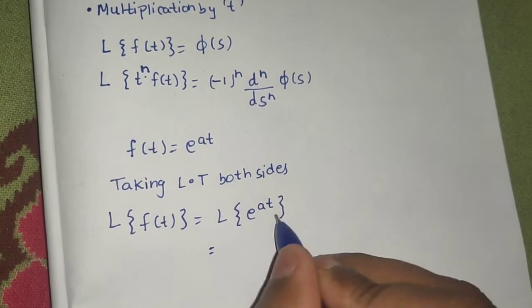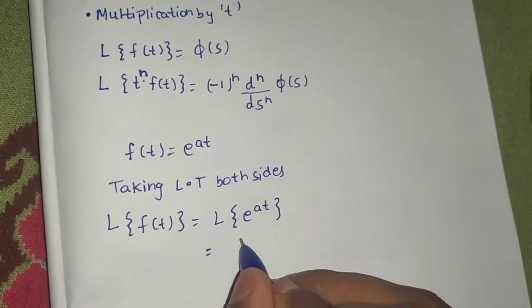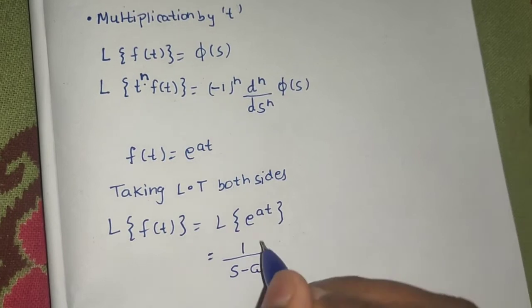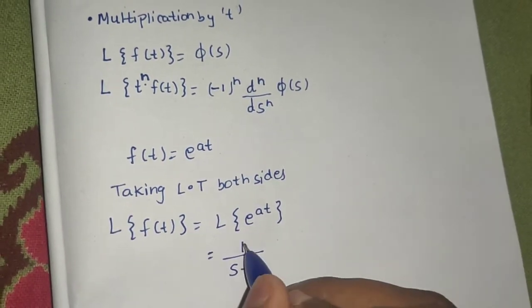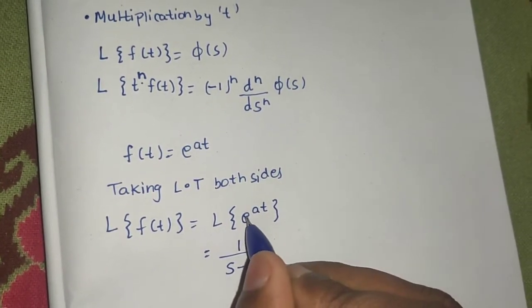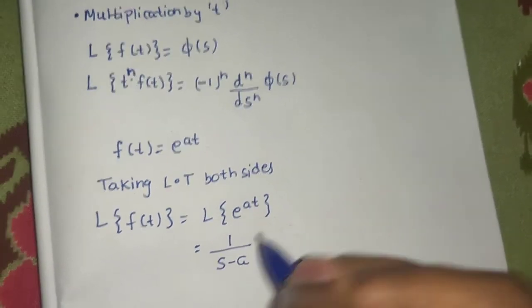We know that Laplace of e power at is simply 1 upon s minus a. If it will be e power at, it is 1 upon s minus a. If it will be e power minus at, it will be 1 upon s plus a.